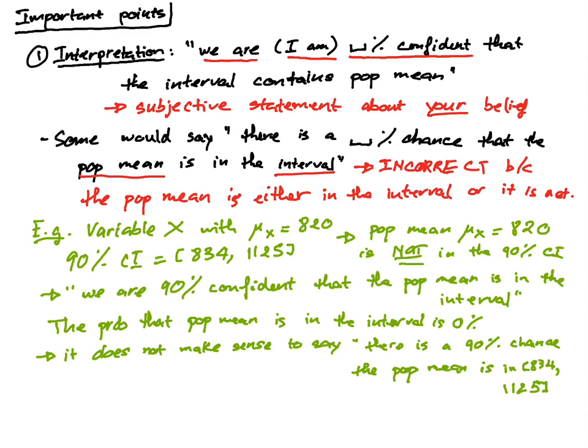The second thing I want to bring up is about the general formula. Remember that the general formula, which is x-bar plus minus z sub alpha over 2 times sigma x divided by root n, this formula only works if x-bar is normal.